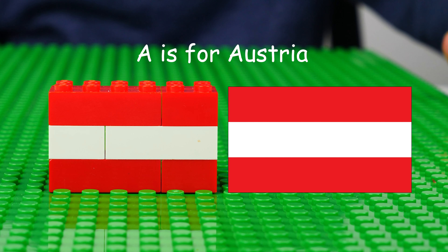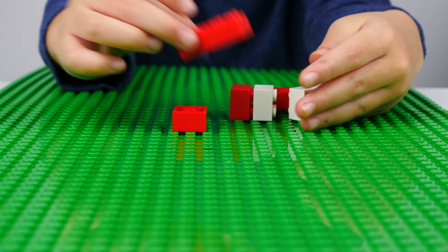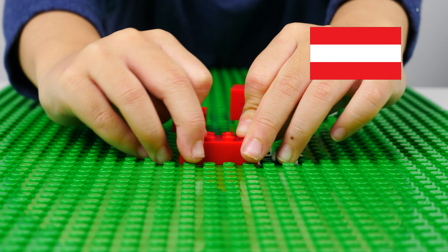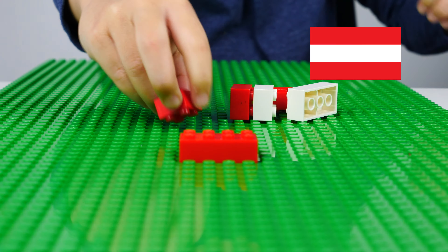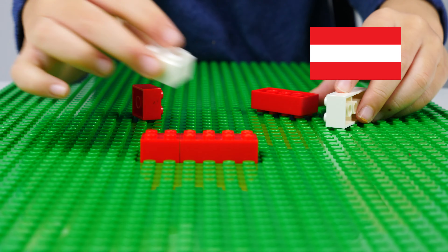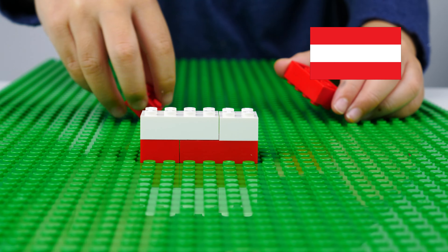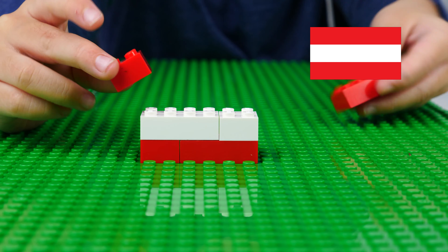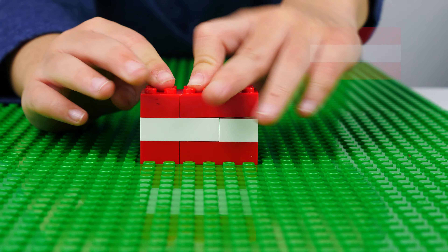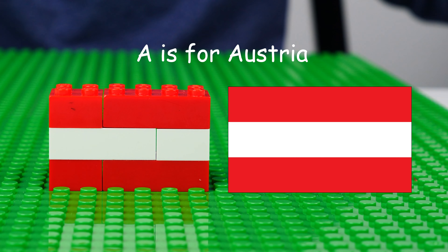A is for Austria. First, you need to put this right over here. Put this here. Push it. Put one here, and here, and put this in this. We put them together. This is Austria.